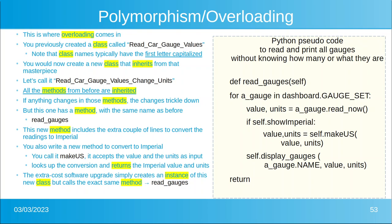This new class has a method with the same name as before — Read Gauge — but it includes extra lines to convert readings to imperial units if that's what the mechanic wants. You also write a new method called MakeUS that accepts value and units as input, looks at the conversion, and gives back the US version of the metric units. The extra-cost software simply creates an instance of this new class but calls the exact same method, read gauges.